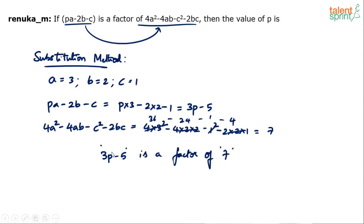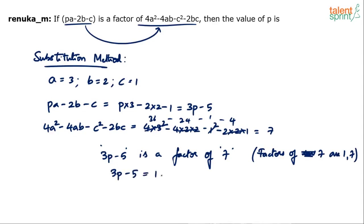What are we saying? 3p minus 5 is a factor of 7. What are the factors of 7? We know that 7 is a prime number, so its factors are 1 and 7. This means 3p minus 5 equals 1, or 3p minus 5 equals 7. That's the idea.